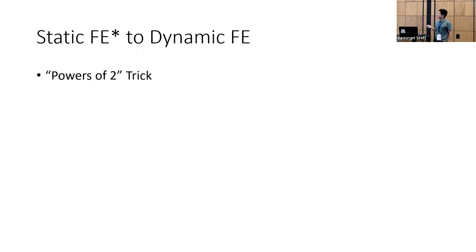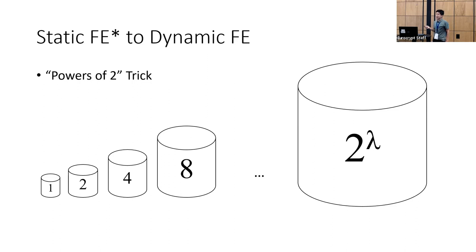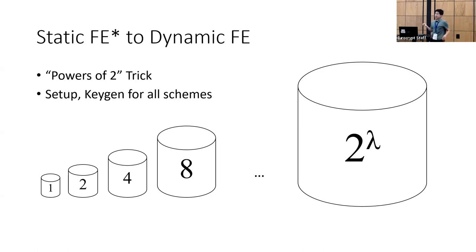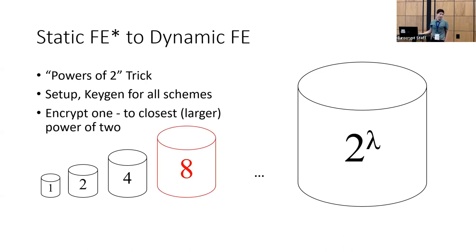For the final step, now that we have our efficient static scheme, the goal is to move Q from setup to encrypt time. We use a standard powers-of-two trick: run setup and keygen to instantiate λ different static FE schemes, where each scheme is run on a collusion bound that is a power of two. Since setup and keygen are now efficient, it's fine that this goes up to exponential in the security parameter, and since there are only λ of them, running all of them is efficient. When it comes time to encrypt and you know your collusion bound, you just pick the closest power of two larger than your bound and encrypt to that scheme.